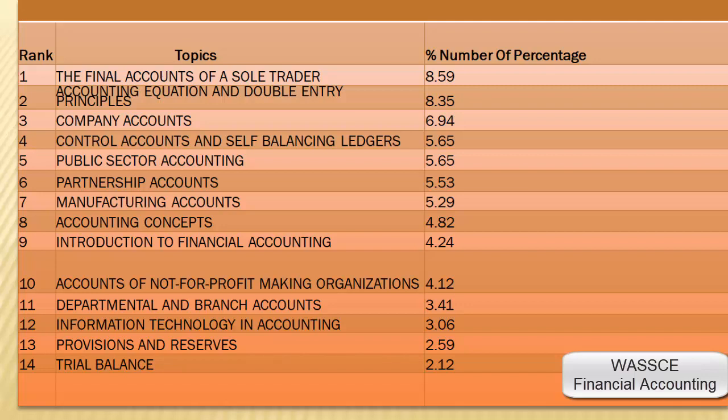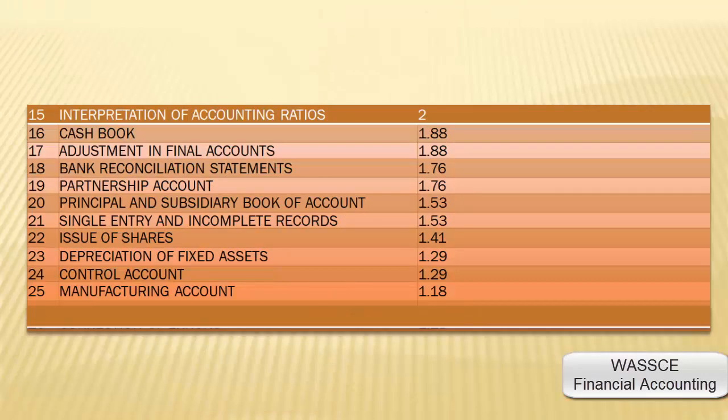Trial balance: 2.12%. Interpretation of accounting ratios: 2%. Cashbook: 1.88%. Adjustments in the final accounts: 1.88%. Bank reconciliation statement: 1.76%.